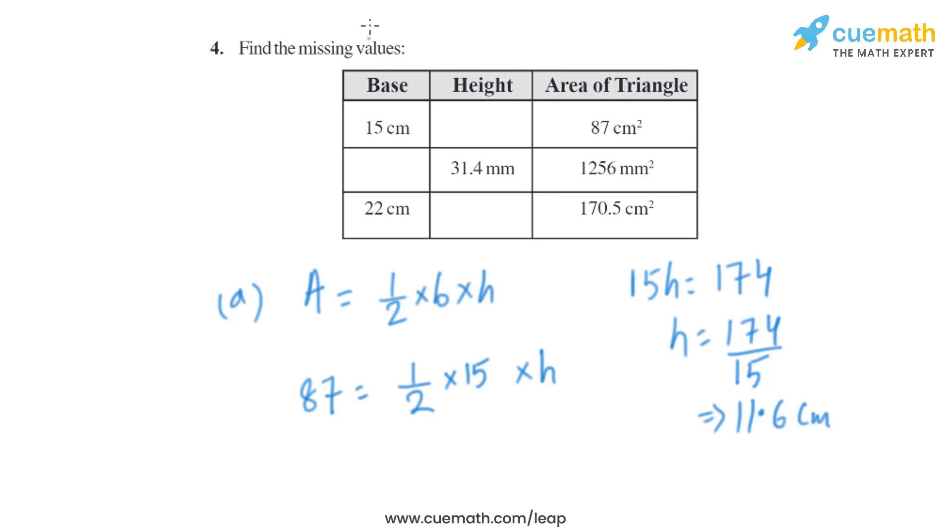Now let's move on to the second part. The area of triangle is given, 1256 square millimeter, and height is given, that is 31.4 millimeter. So we have to find the value of base from there. So when we simplify it we will get 31.4B that will equal to 1256 multiplied by 2, which is 2512.